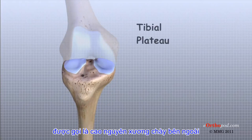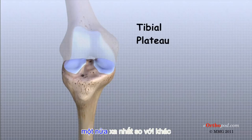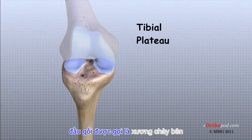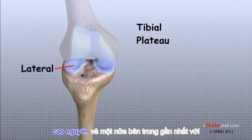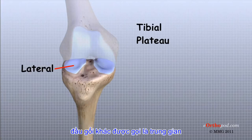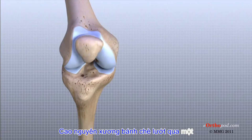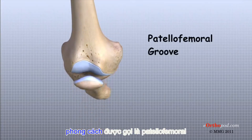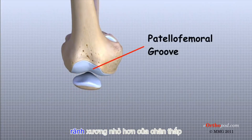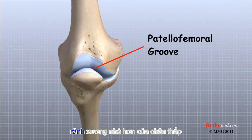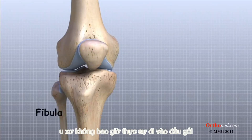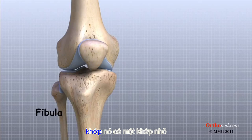The surface is called the tibial plateau. The outside half, the farthest away from the other knee, is called the lateral tibial plateau, and the inside half, closest to the other knee, is called the medial tibial plateau. The patella glides through a special groove formed by the two femoral condyles called the patellofemoral groove. The smaller bone of the lower leg, the fibula, never really enters the knee joint. It does have a small joint that connects it to the side of the tibia, and this joint normally moves very little.